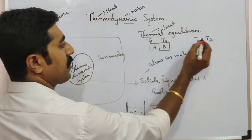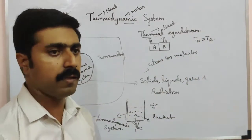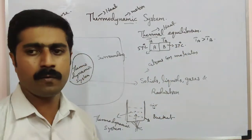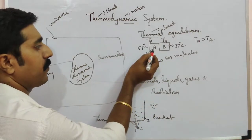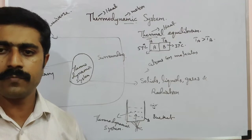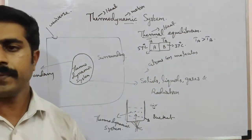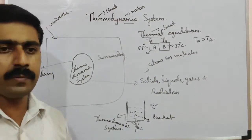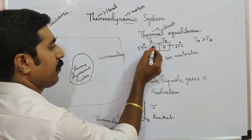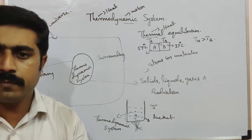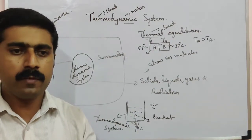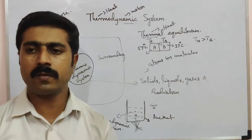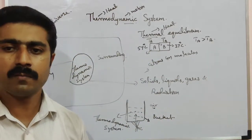Suppose the temperature of the first object T_A is greater than T_B — for example, 57 degrees Celsius versus 37 degrees Celsius. Heat energy is transferred from the object at higher temperature to the object at lower temperature. After some time, both objects maintain the same temperature — this state is called thermal equilibrium.